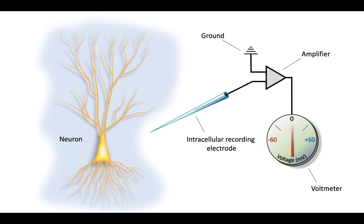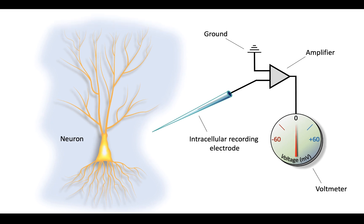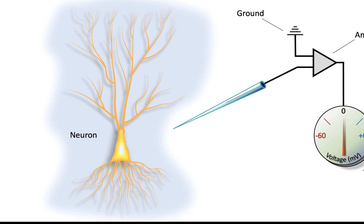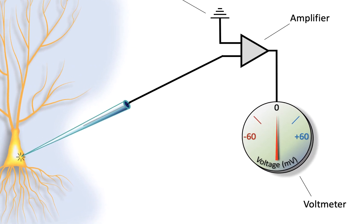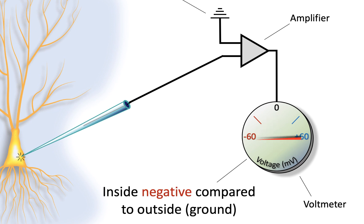The membrane potential. What is a membrane potential? So put simply, the membrane potential is a voltage difference between the inside of a cell and the outside of the cell. And for most cells, under most conditions, that voltage is approximately negative 60 millivolts, inside the cell compared to outside the cell.